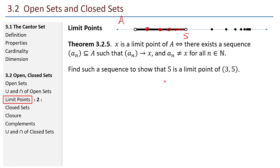Find a sequence to show that 5 is a limit point of the interval from 3 to 5. Pause the video and take a second. Here's how you might do it: simply take the sequence 5 minus 1/n. The first number in this sequence is 4, then 4 and a half, then 4 and 2/3, and so on. All those numbers are contained in that interval from 3 to 5, and the limit of that sequence approaches 5.